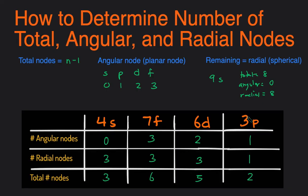And that's really it. That's how you can calculate the total angular and the number of radial nodes, by remembering these rules.